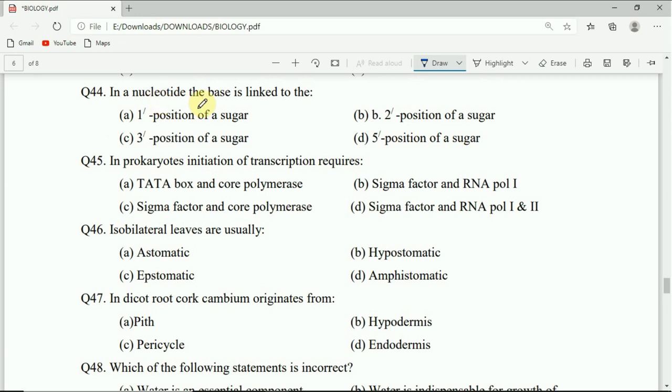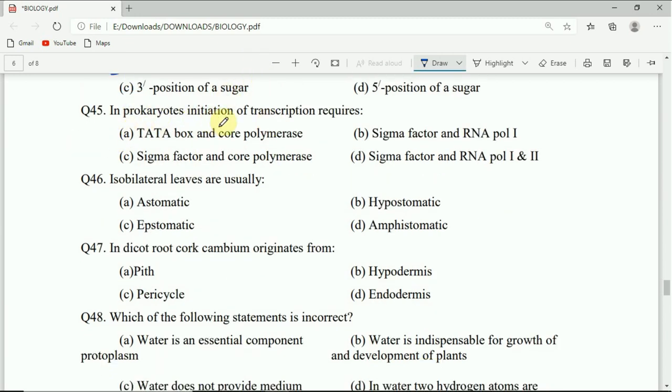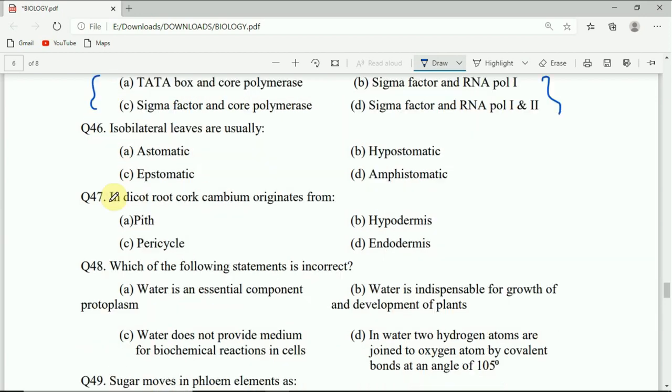Question 44: In a nucleotide, the base is linked to the 1 position of sugar, 2 position of sugar, 3 position of sugar, or 5 position of sugar. Correct answer will be A, that is 1 position of sugar. Question 45: In prokaryotes, initiation of transcription requires TATA box and core polymerase, sigma factor and core polymerase, sigma factor and RNA pol 1, or sigma factor and RNA pol 1 and 2. You have to answer the correct answer in my comment box.